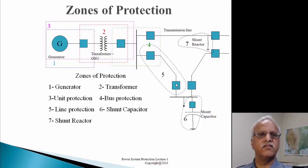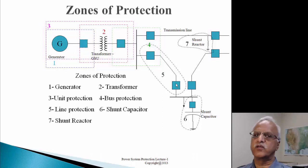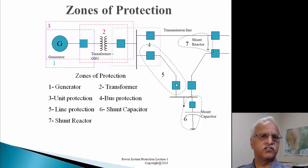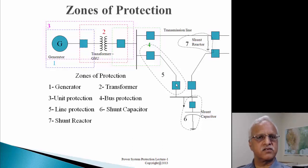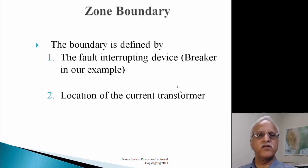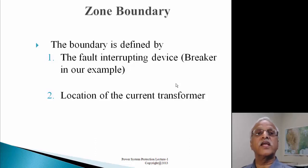We have defined zones of protection. The generator zone of protection opens only the breaker associated with the generator. The transformer zone covers the transformer and opens breakers on both high side and low side for a fault or abnormality. Unit protection opens on the high side; line protection opens breakers on both ends. The intent is to detect the fault and isolate only the faulted equipment. A zone boundary is defined by the fault interrupting device - the breaker - and the monitoring device, the location of the current transformer.